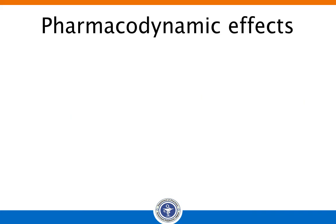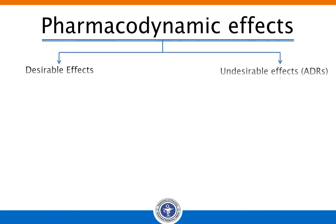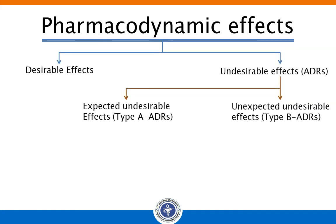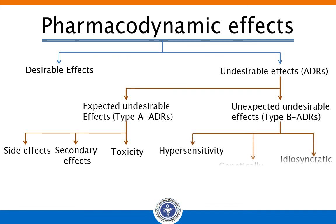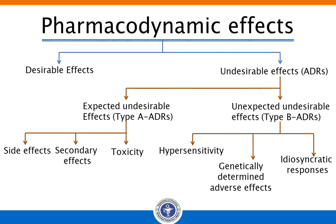To summarize: drugs can produce desirable and undesirable effects. The undesirable effects are called adverse drug reactions. Those which can be predicted from the pharmacological profile are called expected undesirable effects, also named type A, and are classified as side effects, secondary effects, and toxicity. Those which cannot be predicted are called unexpected undesirable effects, type B, and are classified as hypersensitivity, genetically determined adverse effects, and idiosyncratic responses.